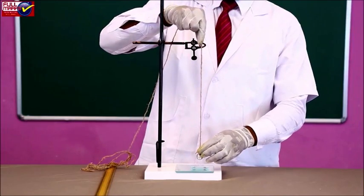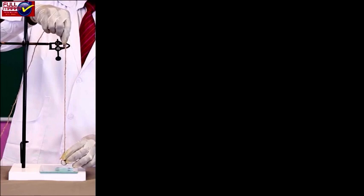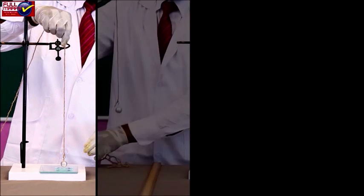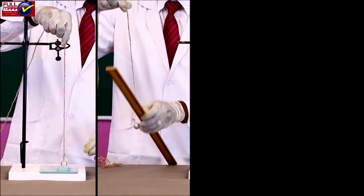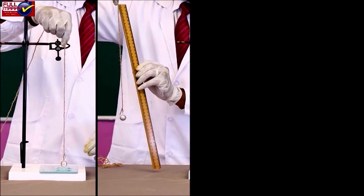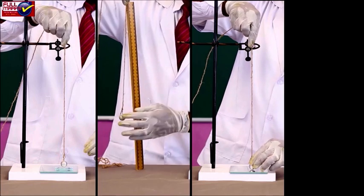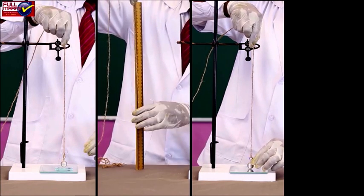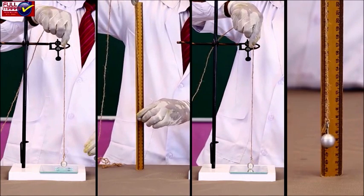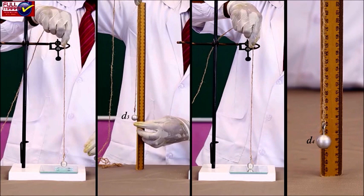Measure the distance D3 between the tip of the needle and top surface of the lens. Measure the distance D4 between the tip of the needle and plane mirror. The mean of two readings would give the value of focal length of plano-concave lens, i.e., F' is equal to (D3 plus D4) by 2.